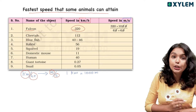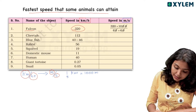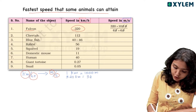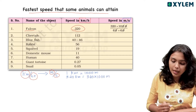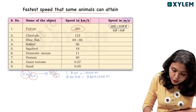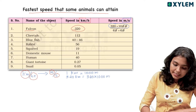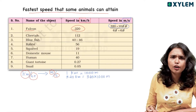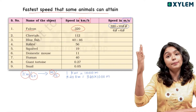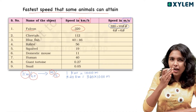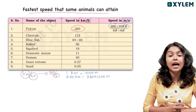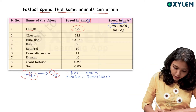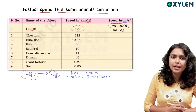For example, 320 kilometer per hour. What does 320 kilometers mean? 320 into 1000 meters. So 320 km/hr means 320 into 1000 meters per hour. Now we need to convert hours to seconds. One hour is 60 minutes, and 1 minute is 60 seconds.